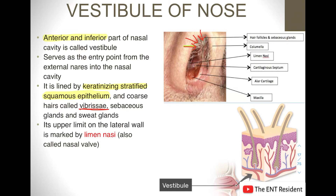The upper limit of the vestibule: on the lateral wall it is marked by a structure known as the limen nasi, also called the nasal valve. So the vestibule is the most anterior and inferior part, lined by keratinizing stratified squamous epithelium, with vibrissae, sebaceous glands, and sweat glands. Its upper limit is the limen nasi, which is present on the lateral wall of the nose, and this limit is also known as the nasal valve.